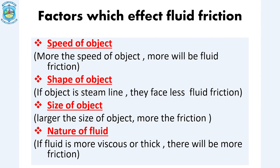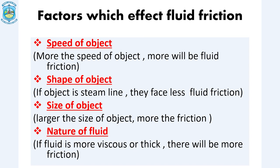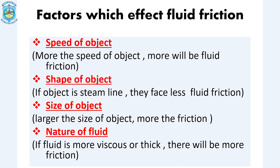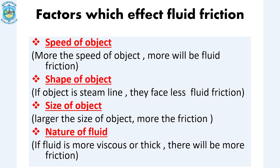There are some factors which affect fluid friction. First, speed of the object — the more the speed, the more the friction. Second, shape of the object — the shapes of aeroplanes and birds are streamlined to resist fluid friction. Third, size of object — the larger the object, the more the friction. Fourth, nature of fluid — if the fluid is more viscous, like honey, it creates more resistance than plain water because the density of honey is larger.